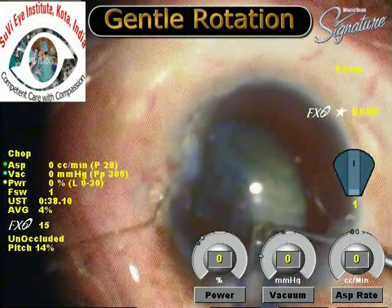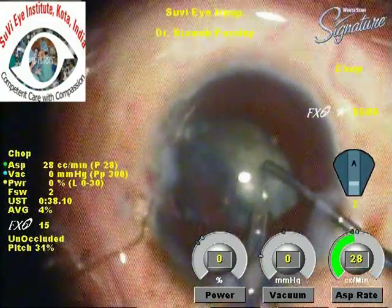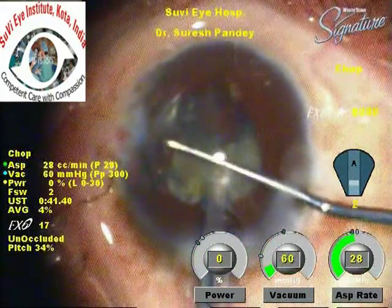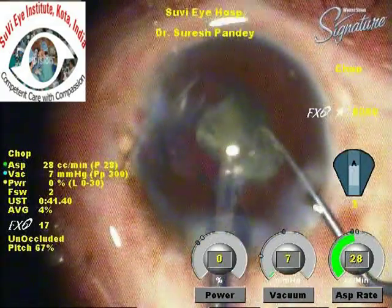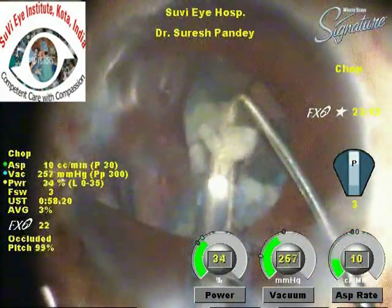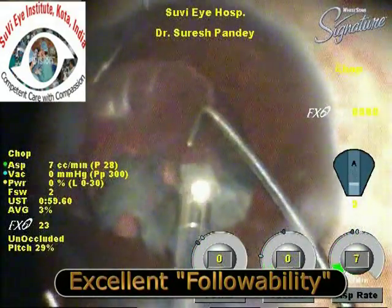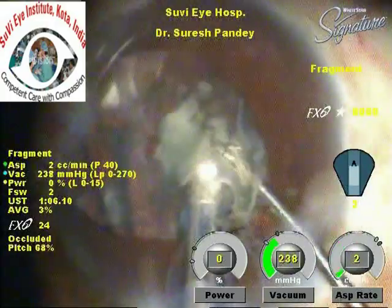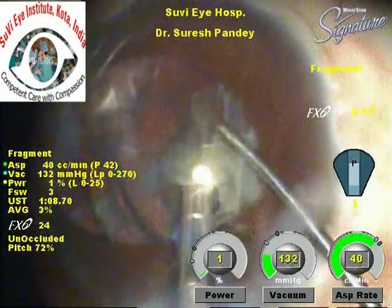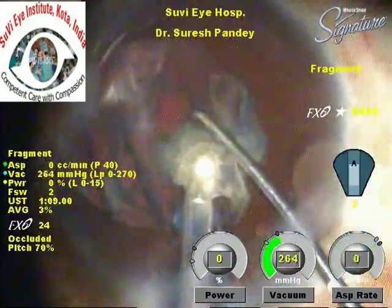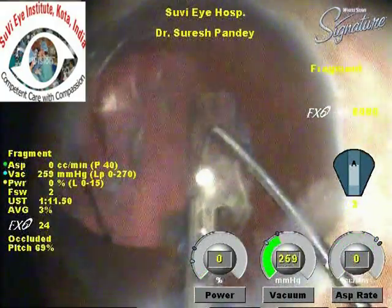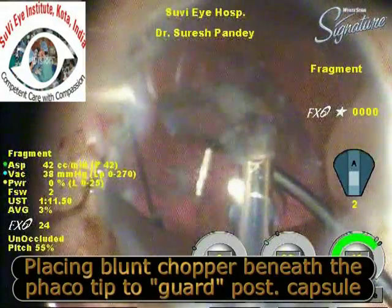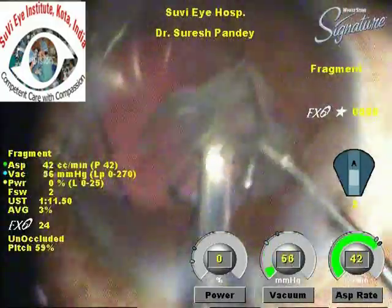We lift the nucleus slightly and do not perform phaco maneuvers exactly in the bag. Rotation must be very gentle, using a lot of viscoelastic to ensure minimal rotation that does not put further stress on the compromised zonules. Especially when removing the last nuclear fragments, it is a good idea to place a second instrument below the phaco probe, because in these cases the posterior capsule is quite floppy and may inadvertently be caught by the probe.